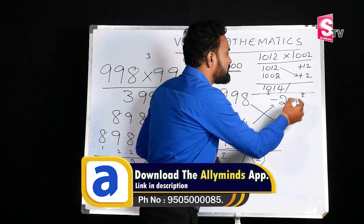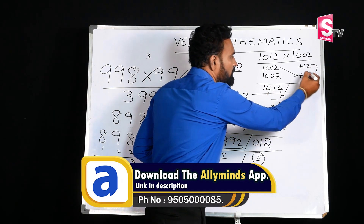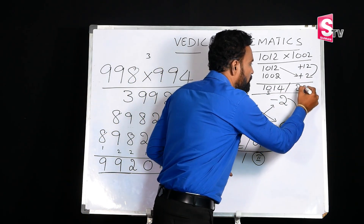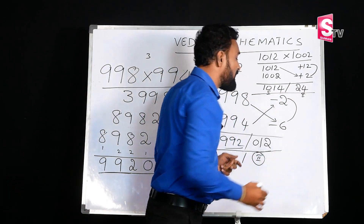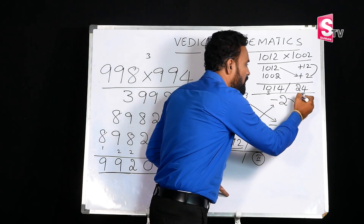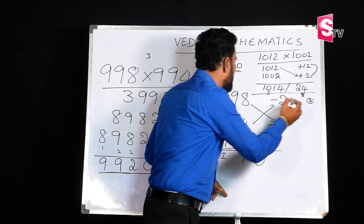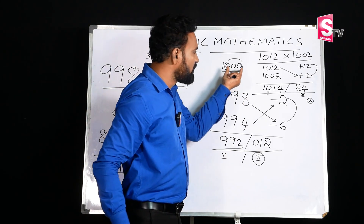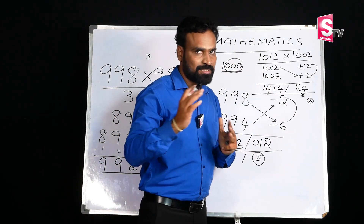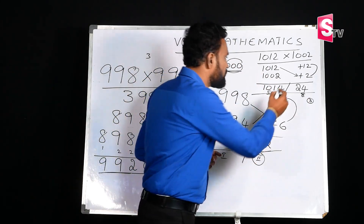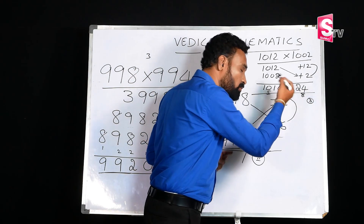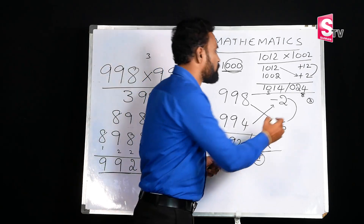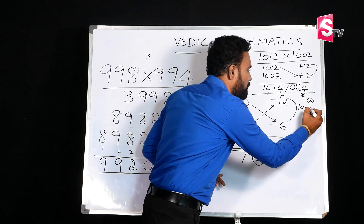For the second part, we multiply just the two deviation numbers. What is 12 times 2? The answer is 24. Since the base 1000 has three zeros, we need three digits in the second part. So the second part is 024. The final answer is 1014024.